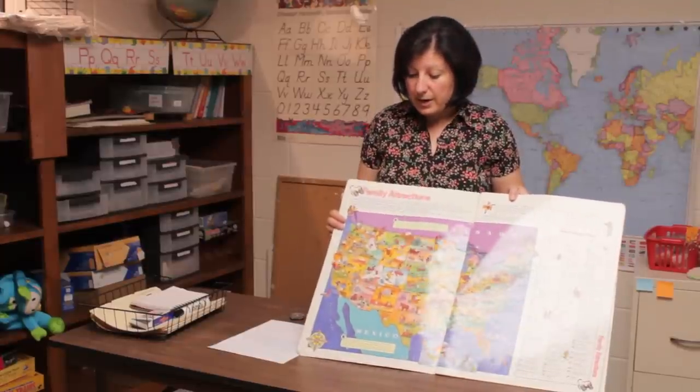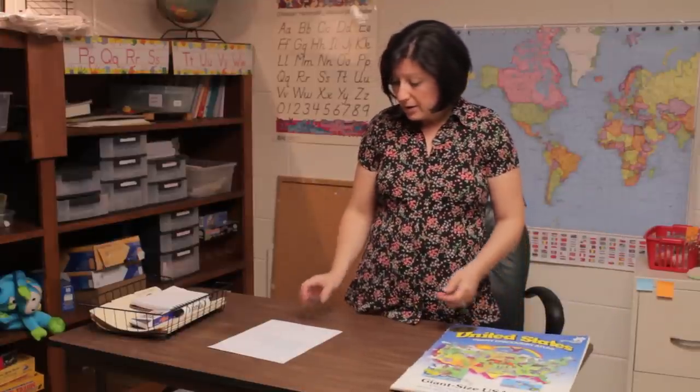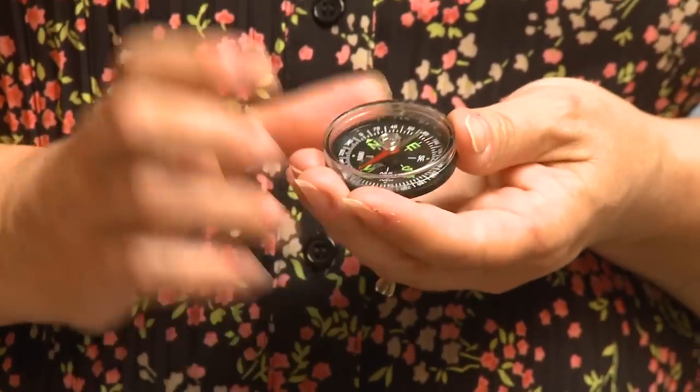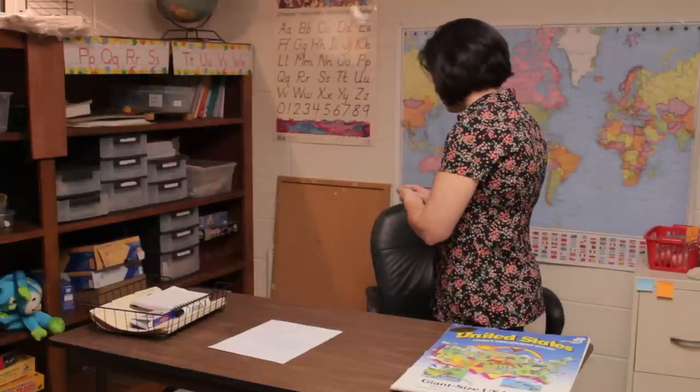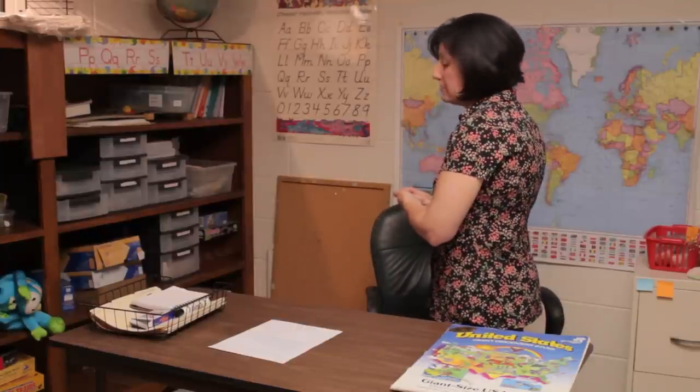After they've had some practice identifying the directions on a map, it's time to get the compass back out. Show them a real compass and explain how it always points to the north. Give the students opportunities to move around and actually move their bodies and realize that the compass always comes back to point to the north.